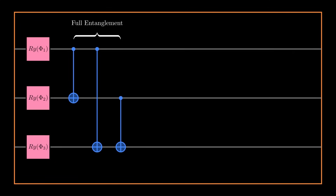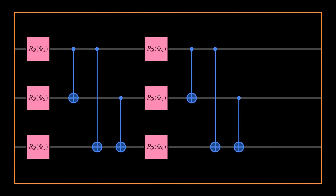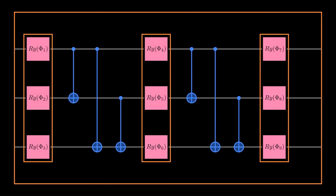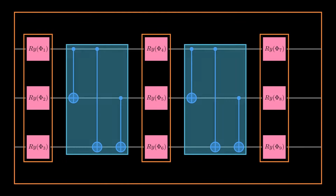Rotational blocks combined with entanglement blocks is termed a quantum layer. Usually this layer is repeated multiple times; however, the hidden layers usually end with a rotational block. Note that some researchers refer to hidden layers as only the rotation blocks and not the entanglement blocks, since only rotational blocks are actually trainable. Also, some researchers like to omit the entanglement blocks in a quantum neural network.